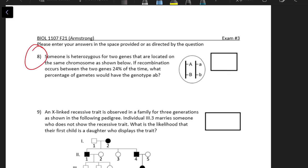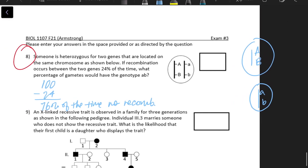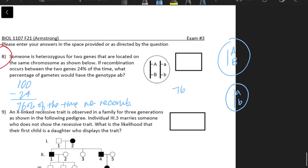Okay, and last but not least, number eight. Someone is heterozygous for two genes that are located on the same chromosome as shown below. If recombination occurs between the two genes 24% of the time, what percentage of gametes would have the genotype AB? So let's start off with, if recombination happens 24% of the time, that means it's not happening 76% of the time. And when recombination doesn't happen, the gametes that you're going to get are AB or ab, and it's a 50% chance which one you get. So all you do is divide 76 by 2 and you get 38%.